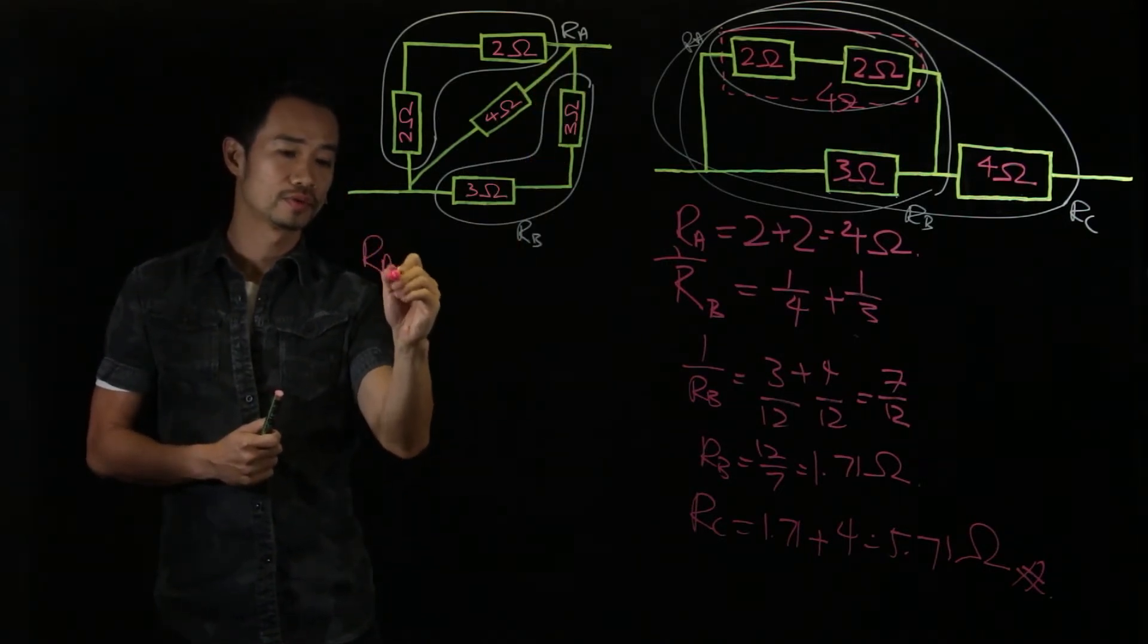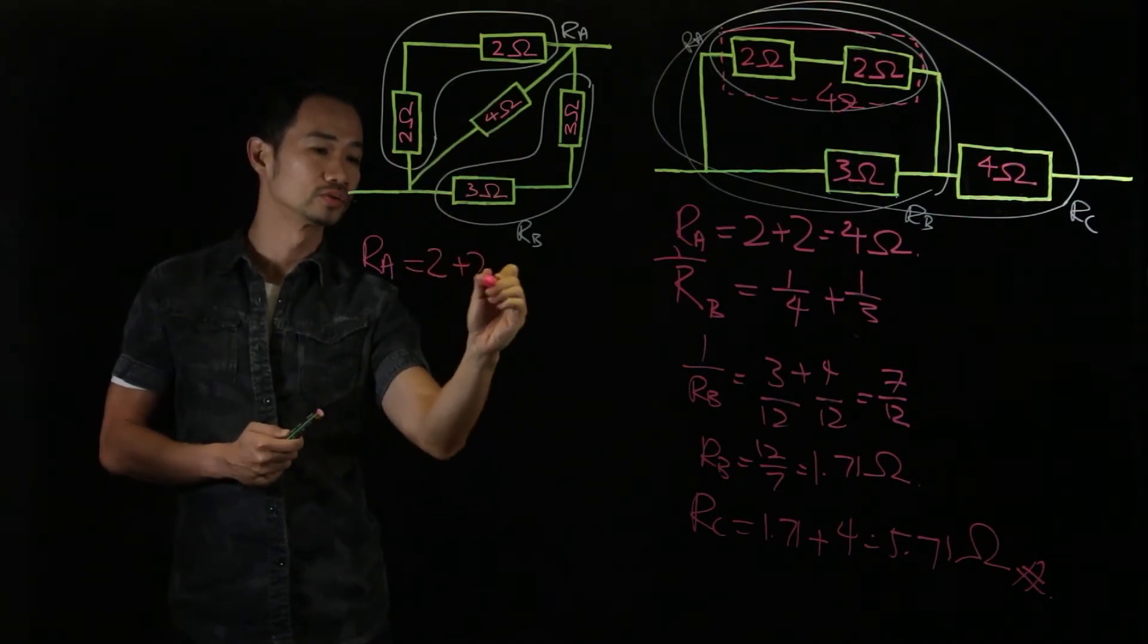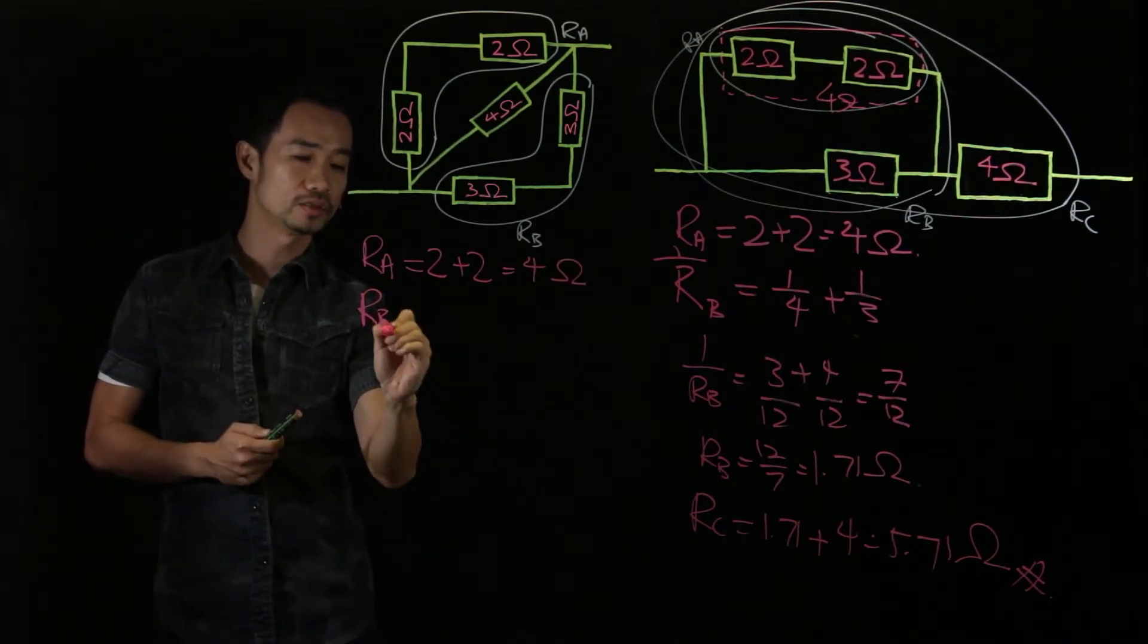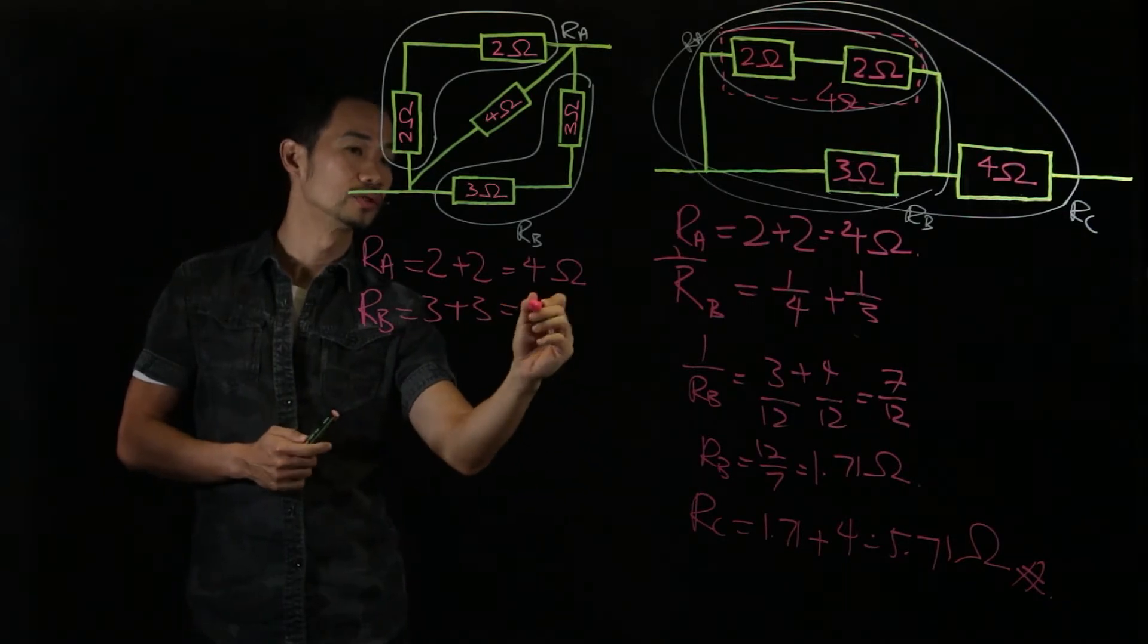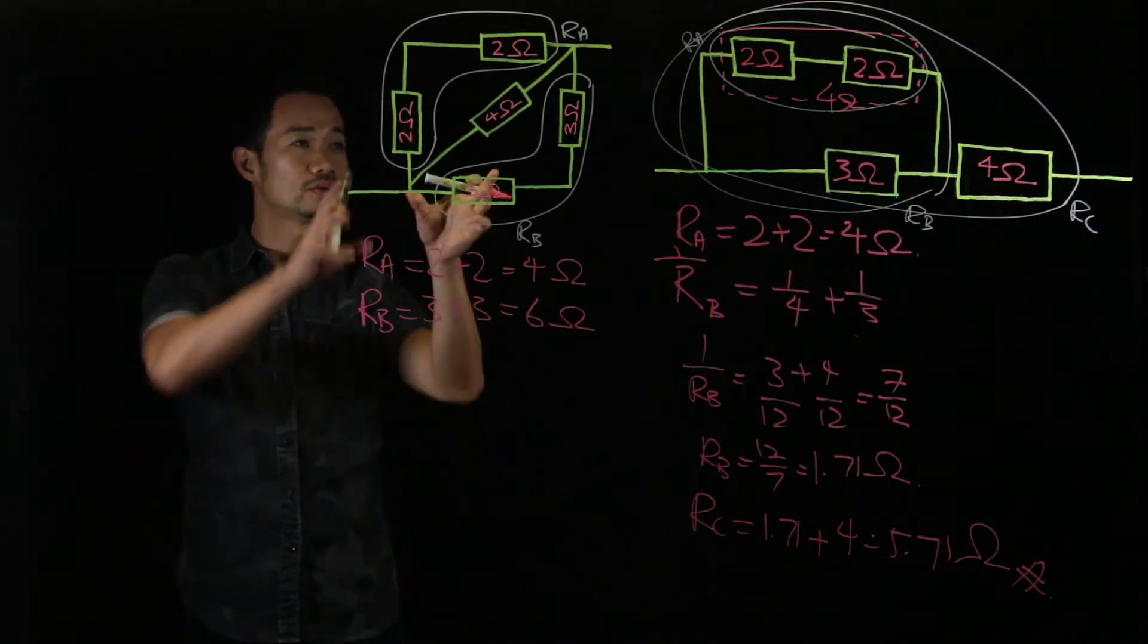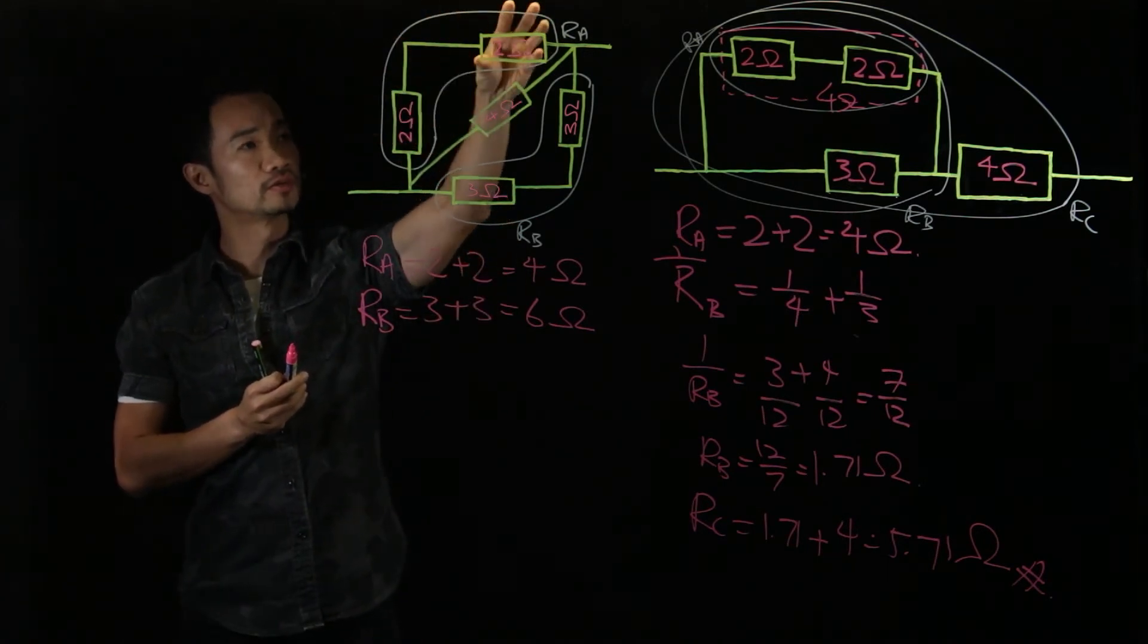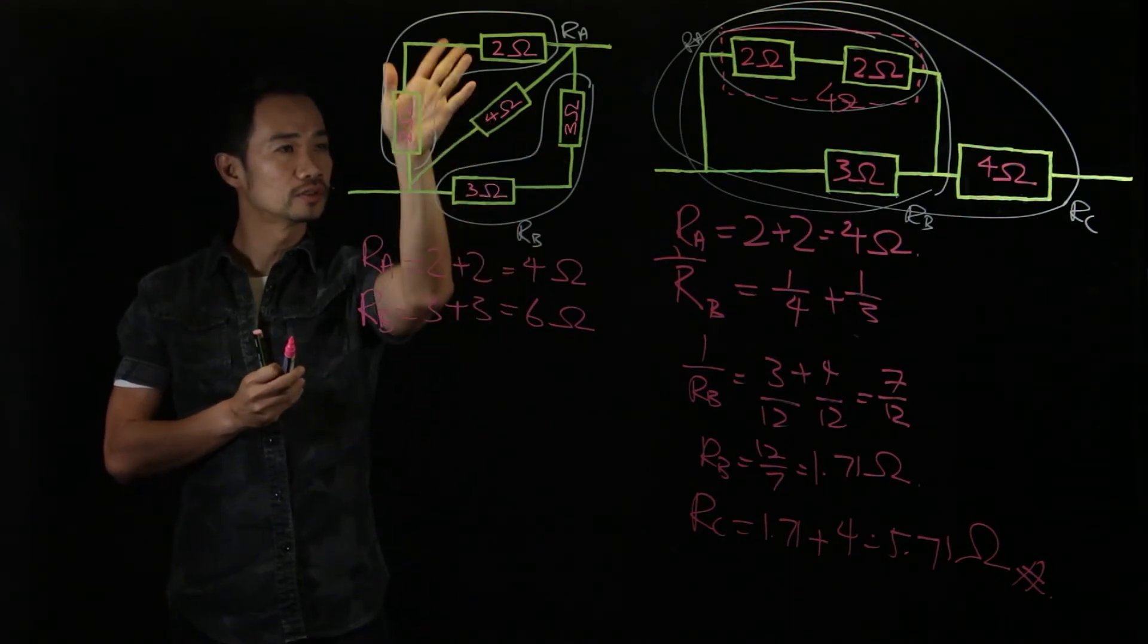So Ra in series, we just add them up. It goes to 2 plus 2 is equal to 4 ohms. Rb is equal to 3 plus 3 is equal to 6 ohms. So you have these two up already. So if you look at this one as one big resistor, one big resistor and the 4. So these 3 groups, they are actually in parallel.